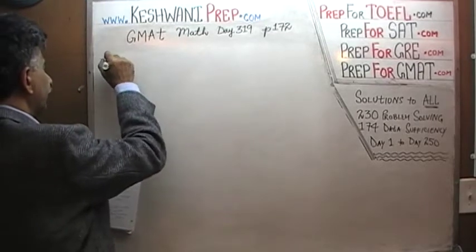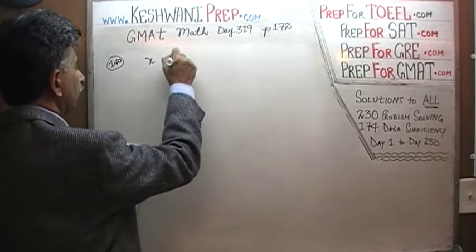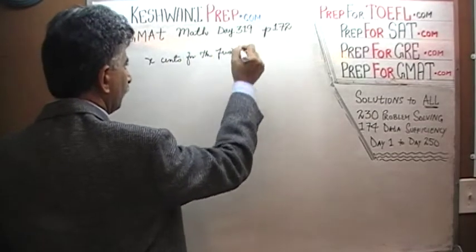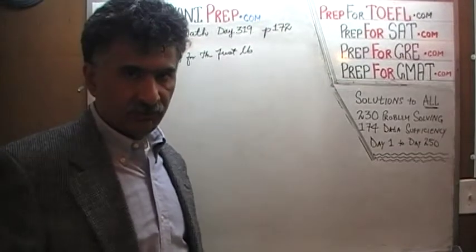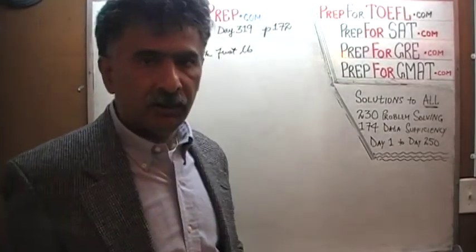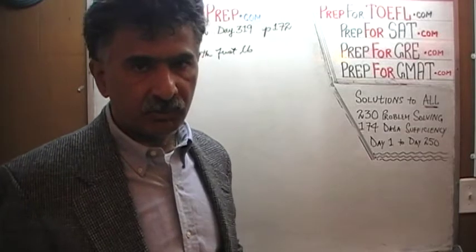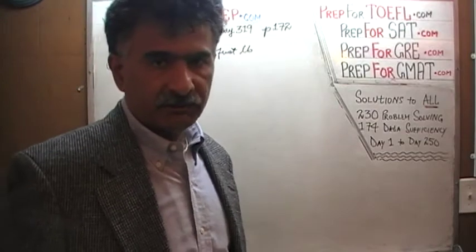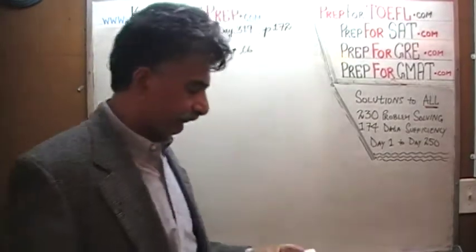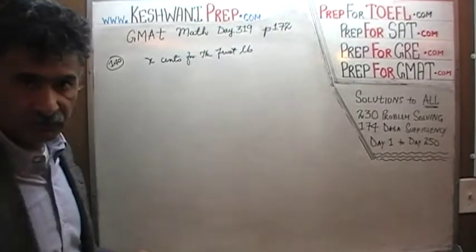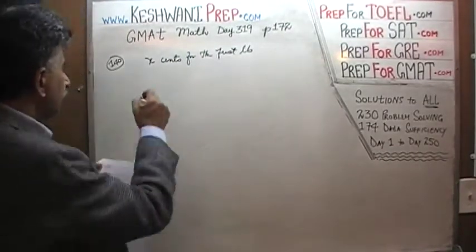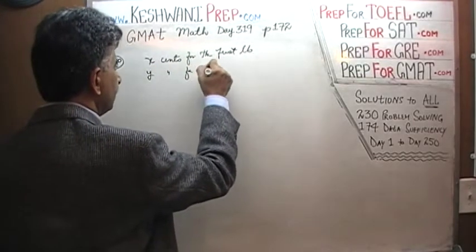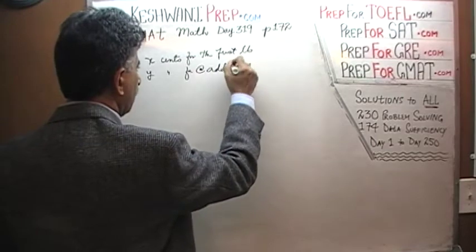Number 140 tells us that it costs X cents for the first pound — we are going to mail some packages. Just like in a taxi ride, the first kilometer costs more than each additional kilometer. So the first pound is going to cost you X cents, which is more than Y. And each additional pound is going to be Y cents.